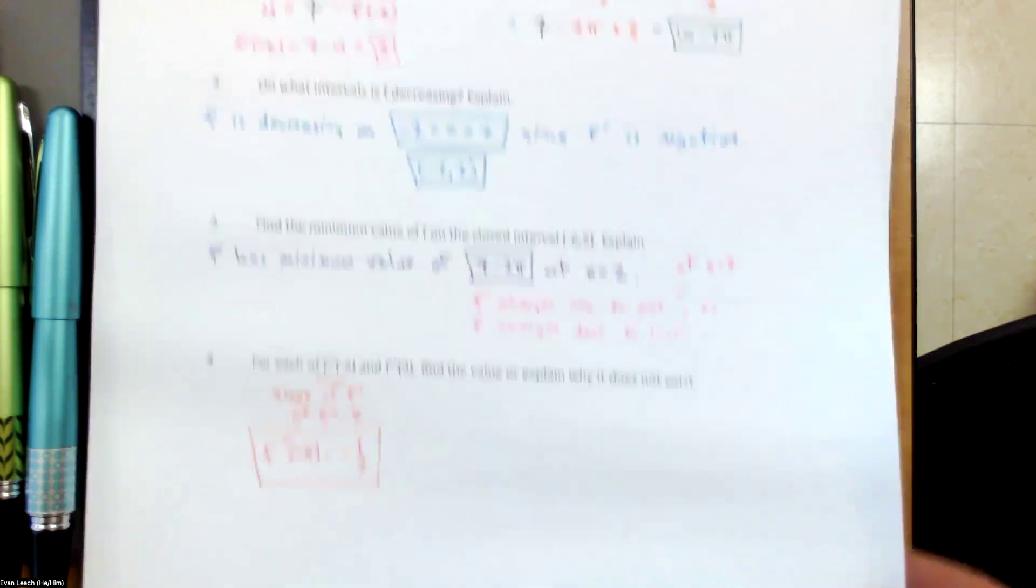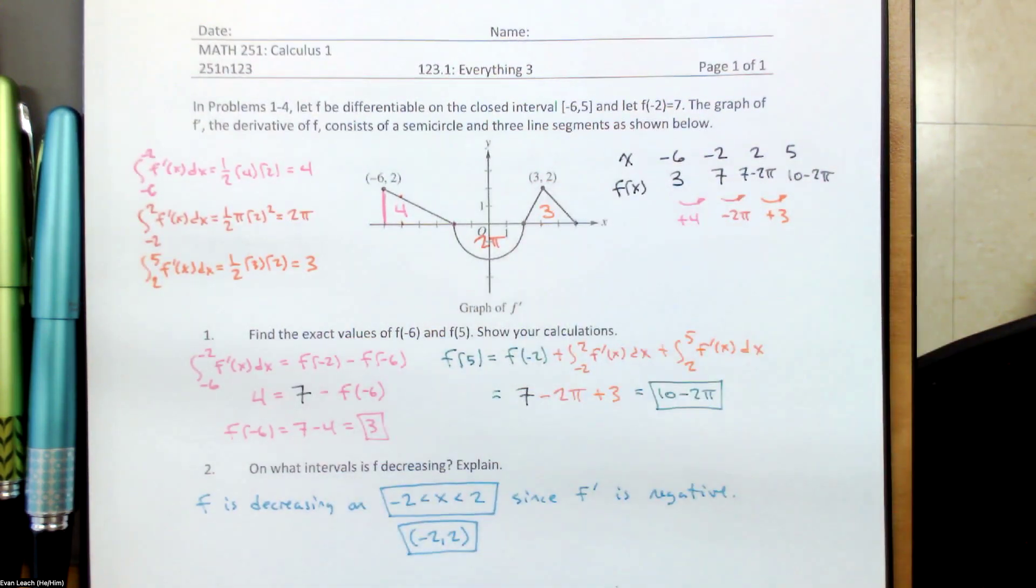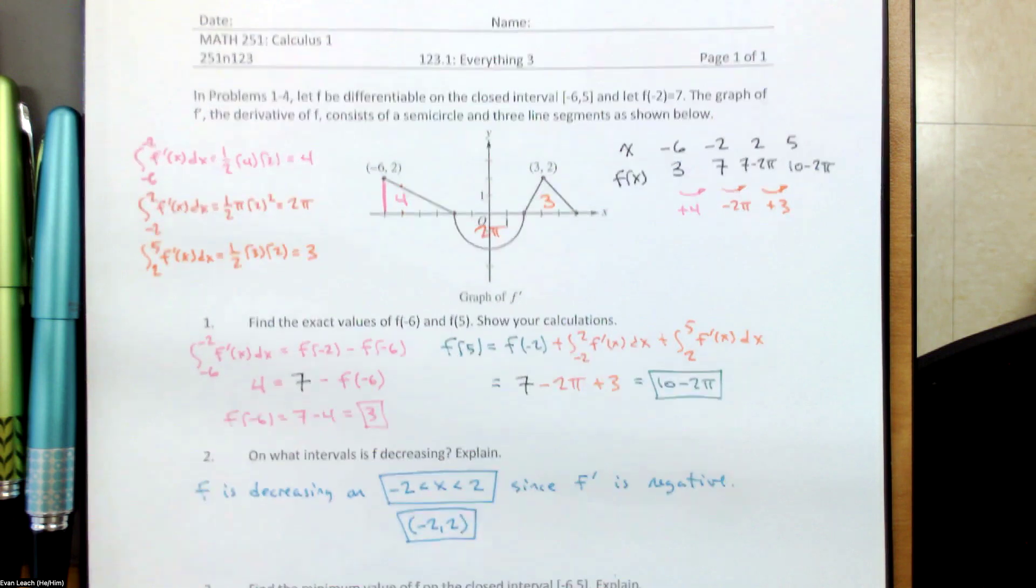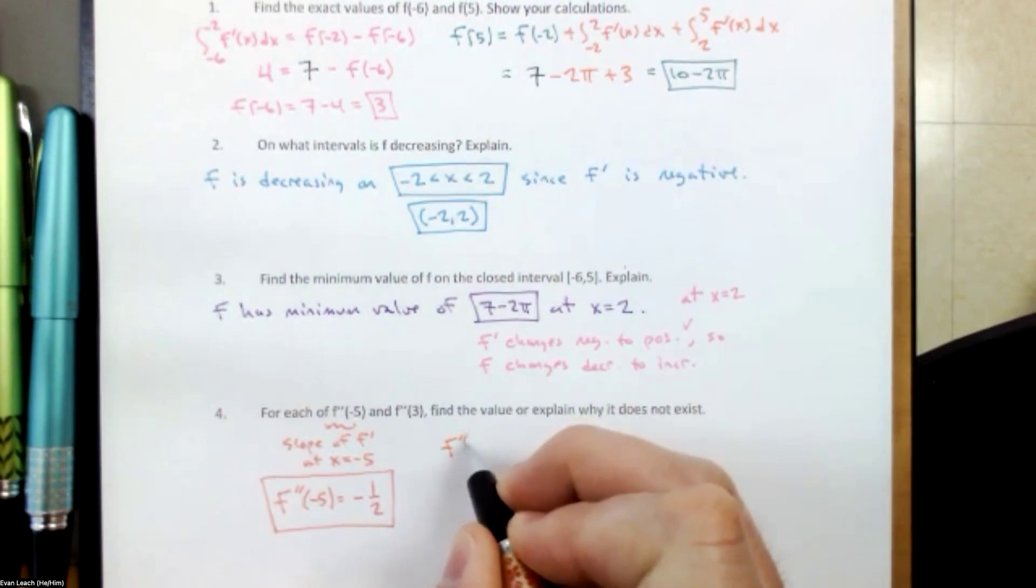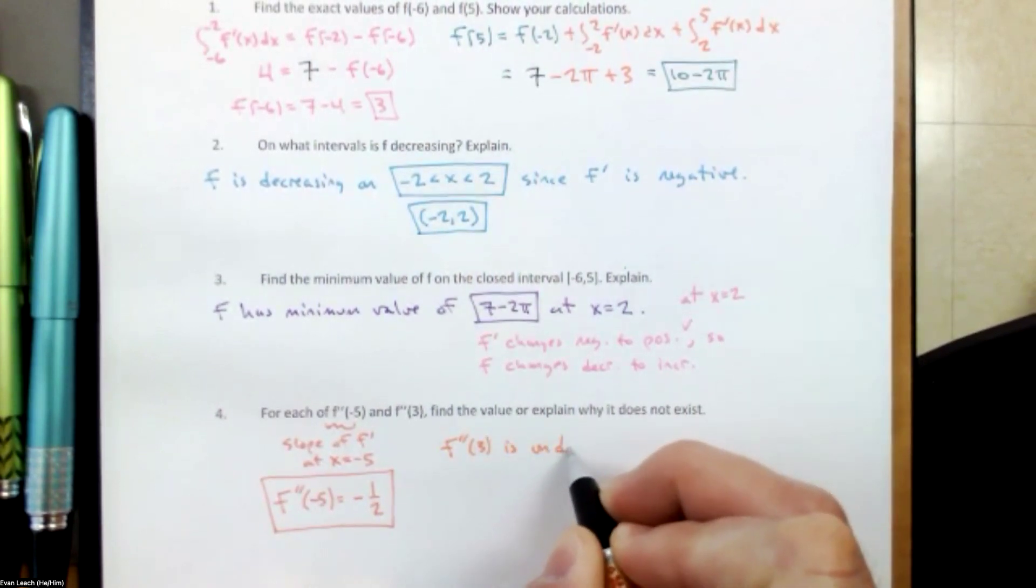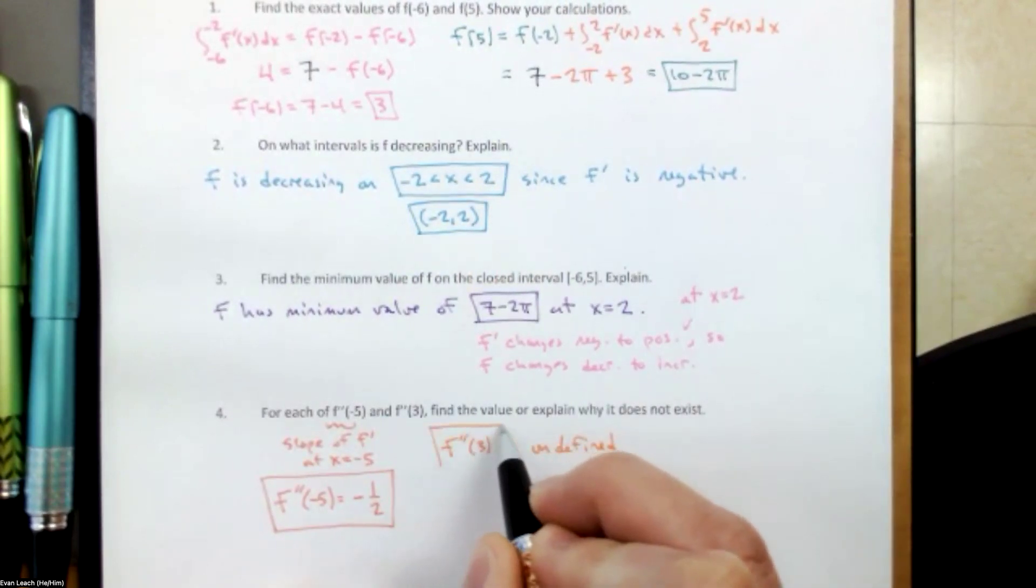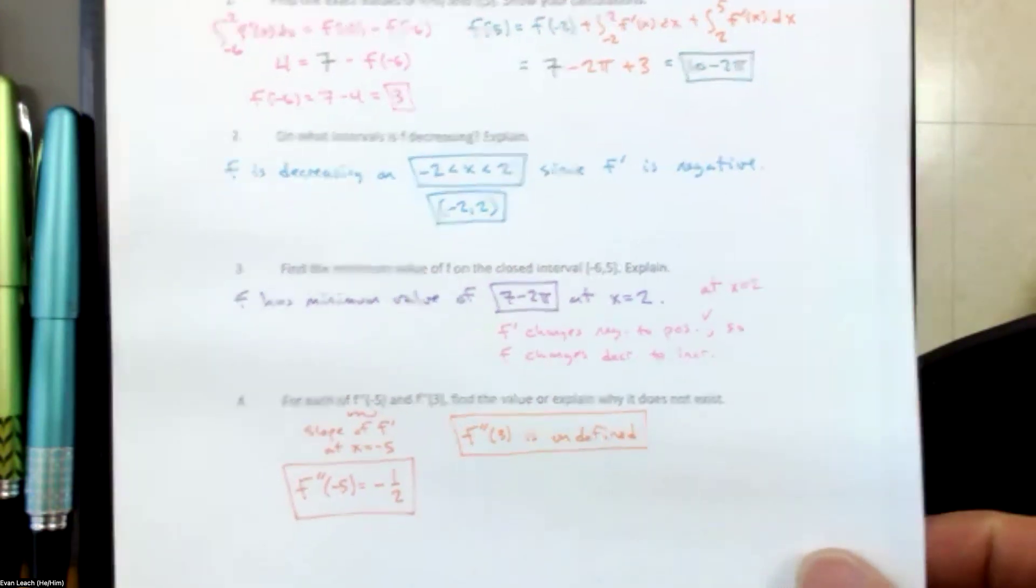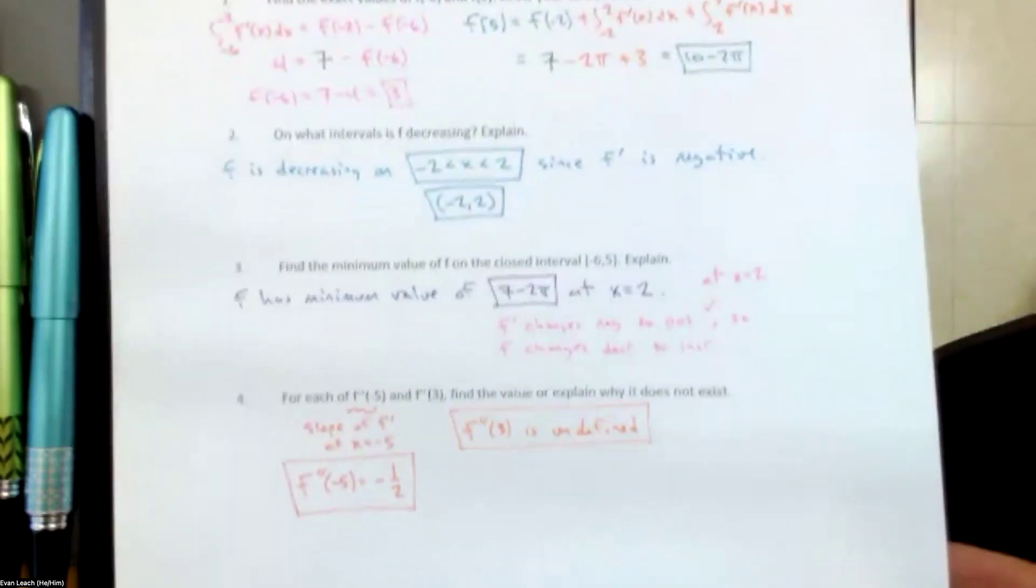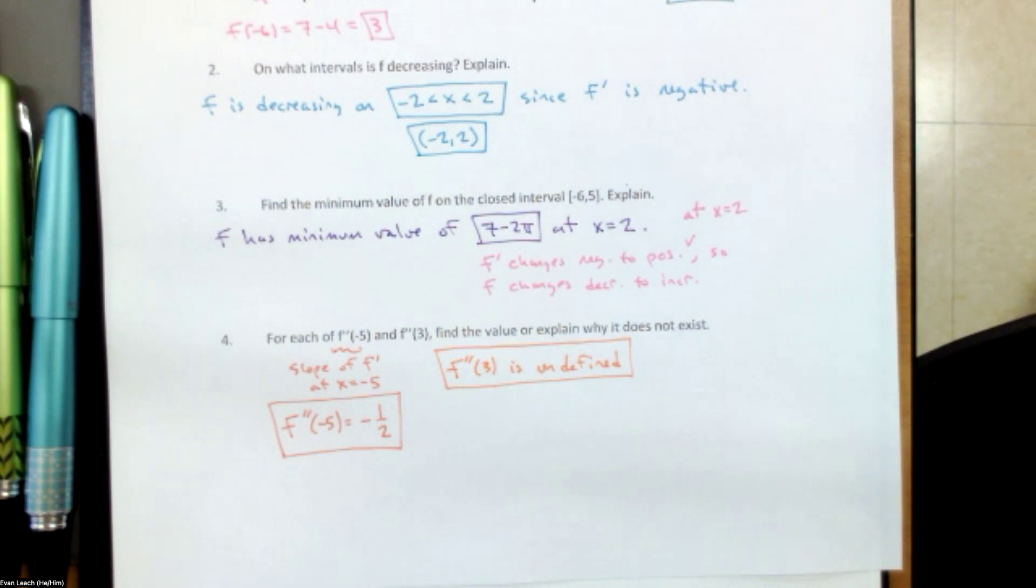At 3, we cannot draw a tangent line. So f double prime at 3 does not exist. F double prime at 3 is undefined. And the reason is that the slope headed from the left is different than the slope from the right. There is no f double prime of 3. If we want a more detailed explanation, the reason is the graph is pointy at 3. That's not a very technical definition. If we want a technical definition, we would have to point out that the slope of the tangent from the left is positive 2, and the slope of the tangent from the right is negative 1.